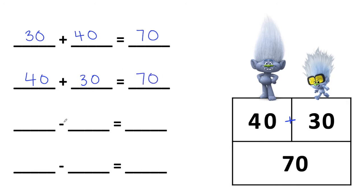And now I know I can write two subtraction number sentences. When I'm subtracting, I'm always going to start with the whole. So one subtraction number sentence is 70 take away one part, which is 30, equals the other part, which is 40.